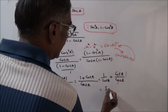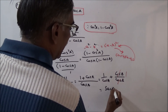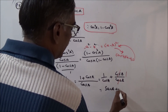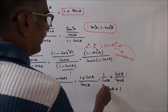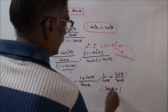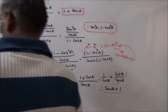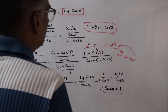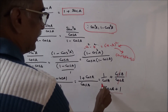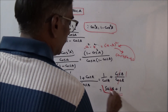Therefore the result is secant A plus 1, which means the left-hand side is equal to the right-hand side. Hence proved.